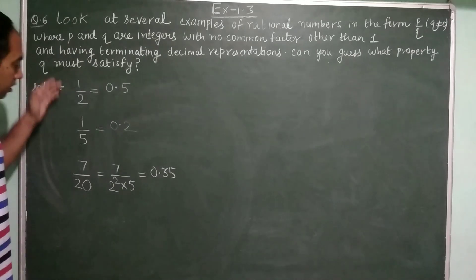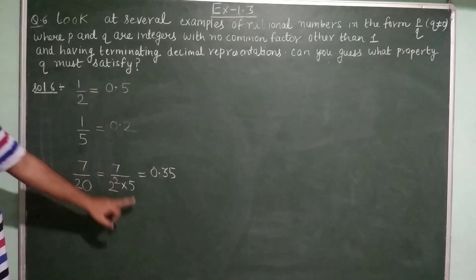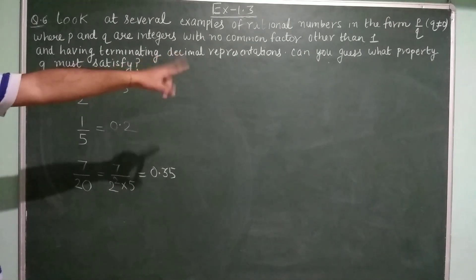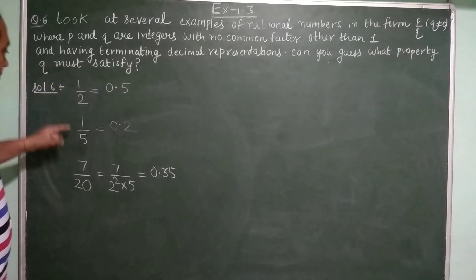Now these are the three examples of rational numbers having terminating decimal extensions. There is a question that, guess what property q must satisfy?